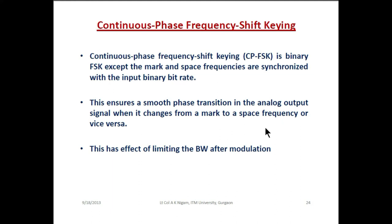Next is continuous phase FSK. Continuous phase FSK is like binary FSK except that during the transition between logic 0 to logic 1 and logic 1 to logic 0, there is a change in frequency as well as a change in phase. This ensures a smooth phase transition in the analog output signal when it changes from mark to space frequency or vice versa, and this has the effect of limiting the bandwidth after modulation.